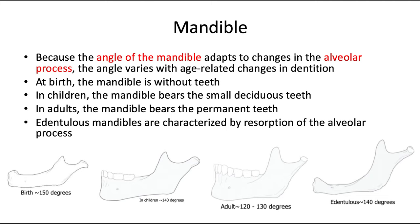The mandible is an interesting bone, and its structure is greatly influenced by its alveolar process — the part of the bone that supports the teeth. The angle of the mandible adapts to changes in the alveolar process. At birth, the mandible is without teeth, and the alveolar portion has not formed yet, so this angle is very obtuse at about 150 degrees.